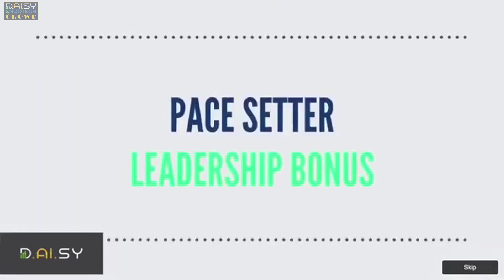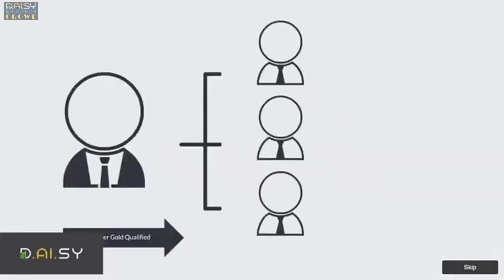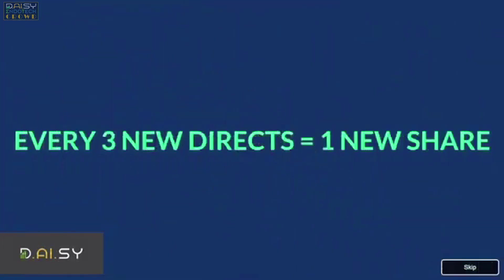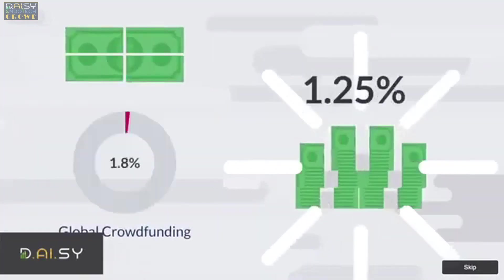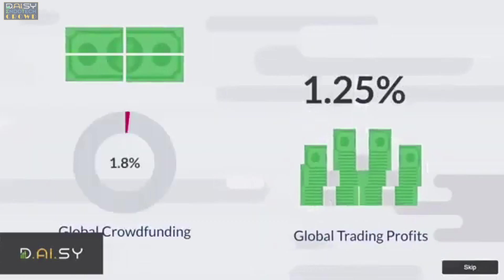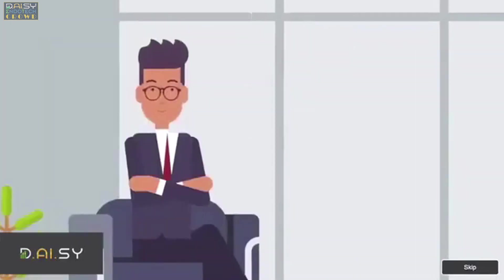Pace setter leadership bonus: help your three directs become pace setter gold qualified and get the reward of one share of pace setter leadership. No equity given away. Every three new directs equals one new share in this profit sharing. And with every share, you get an additional profit sharing in 1.8% of all global crowdfunding, 1.25% of all global trading profits.